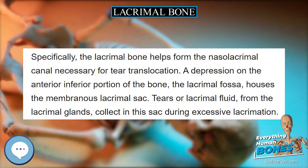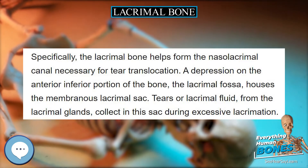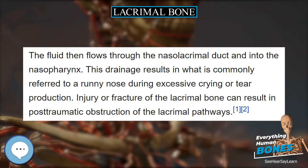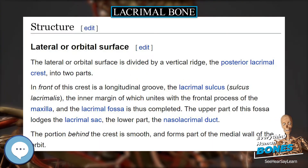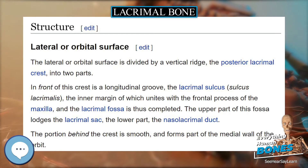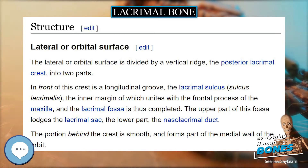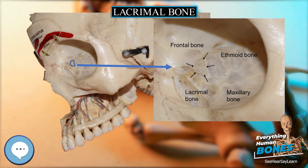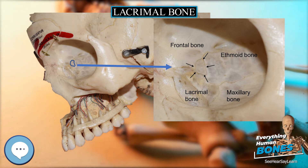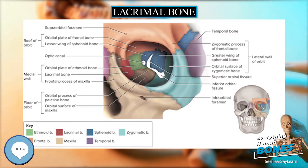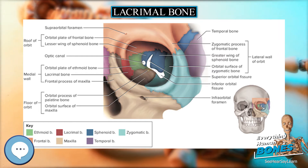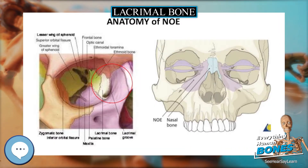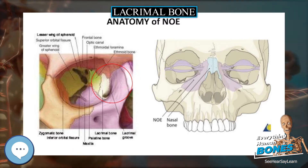The lateral or orbital surface is divided by a vertical ridge, the posterior lacrimal crest, into two parts. In front of this crest is a longitudinal groove, the lacrimal sulcus (sulcus lacrimales), the inner margin of which unites with the frontal process of the maxilla, completing the lacrimal fossa. The upper part of this fossa lodges the lacrimal sac; the lower part, the nasolacrimal duct.